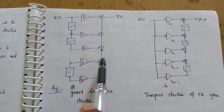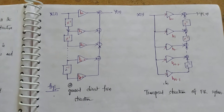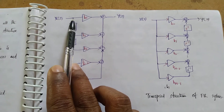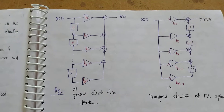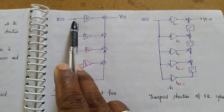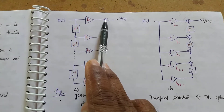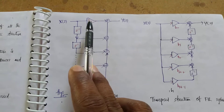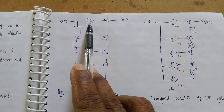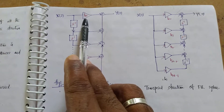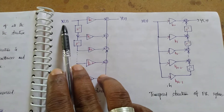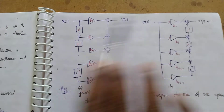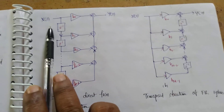In the direct form one structure, the generalized equation applies. The pickoff point — discussed in the basic building blocks — is replaced with the adder, and the adder is replaced with the pickoff point. We also need to change the direction of the branch transmittances. Then we interchange the input and output to get the transposed structure.